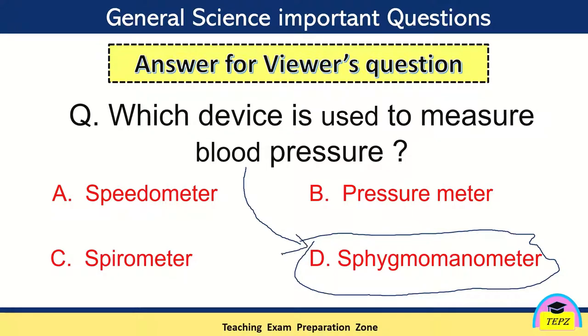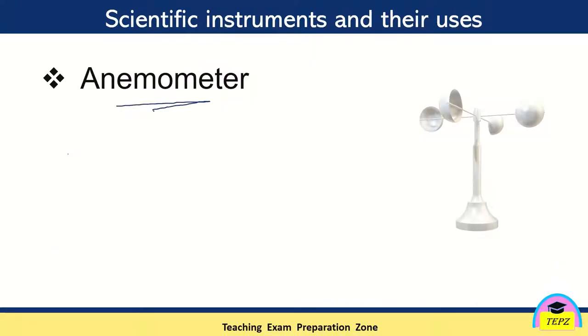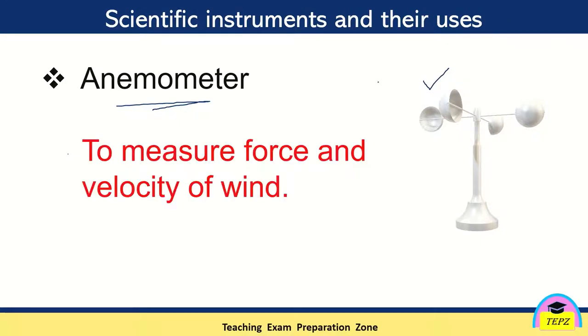It is called sphygmomanometer. First is anemometer, and let's see its uses and this is its picture. This is the anemometer. This is how it looks like. So anemometer is used to measure force and velocity of wind. Anemometer has 4 cups like this. So when the wind blows, these 4 cups rotate. The number of rotations are counted to measure the force and velocity of the wind.